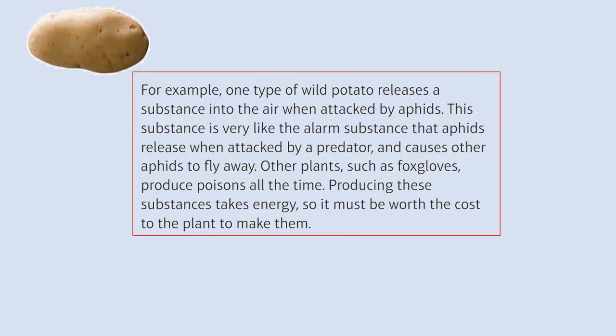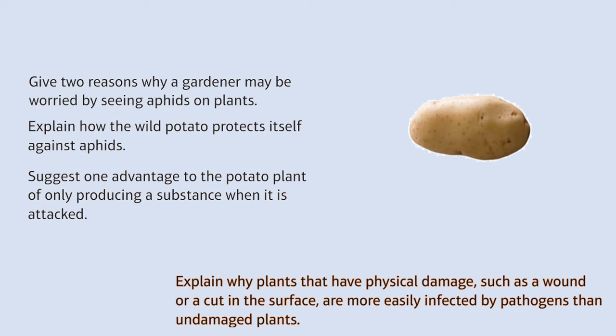The most talked about example comes from potatoes. The wild potato will release a poisonous substance into the air which prevents aphids from eating it — it basically scares them. They'll fly away from the potato when they start eating it because they believe they're under attack. You may have seen on the previous slide that foxgloves are continuously poisonous, which helps prevent animals from eating them — albeit they only eat them once and don't really last much longer after that. Please give yourselves about five minutes to work through the three questions on the left into your books; if you finish, have a go at the extension question at the bottom.